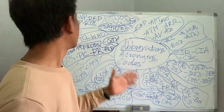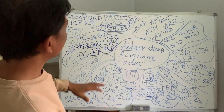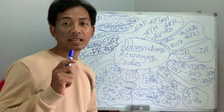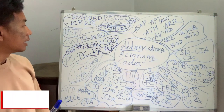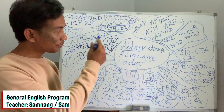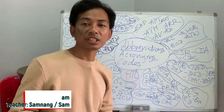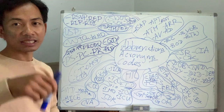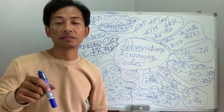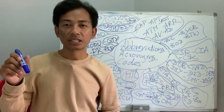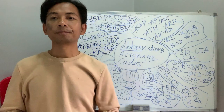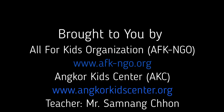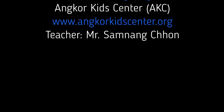So this is about acronyms, abbreviations, and codes. Can you underline which one is an acronym, which one is an abbreviation, and which one is a code? Give me a comment or send me a message on Facebook. I believe you enjoyed this — don't forget to get the PDF below. I have attached a link from our website afk.ngo.org. Thanks so much, enjoy, and don't forget to subscribe to my channel.